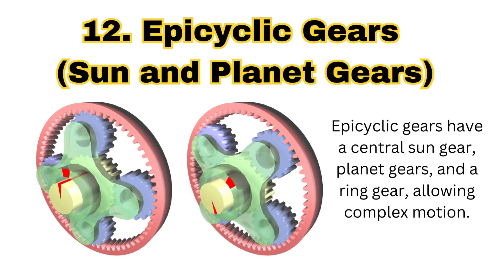The next type of gear is the epicyclic gear, generally called the sun and planet gear. The epicyclic gear has a center sun gear, planet gears, and a ring gear, allowing complex motion. You will find this type of gear from automatic transmissions to planetary gearboxes in machinery.